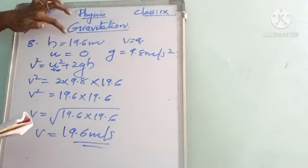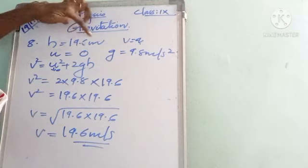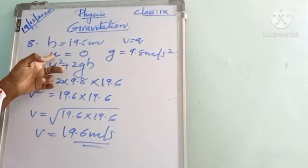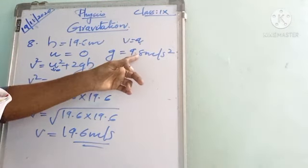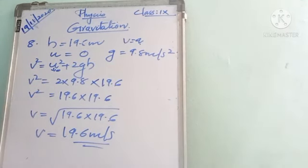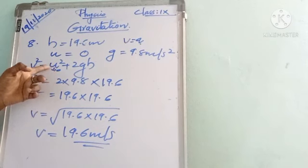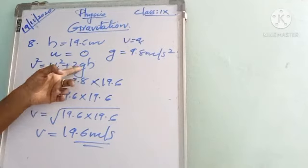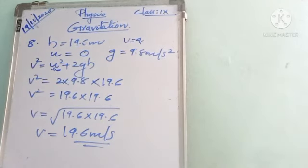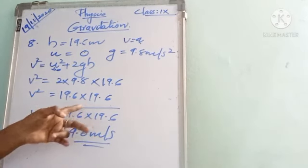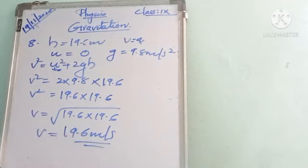To summarize: stone released from rest (U = 0), height = 19.6 m, g = 9.8 m/s². Using V² = U² + 2gH gives V² = 19.6 × 19.6, so V = 19.6 m/s.